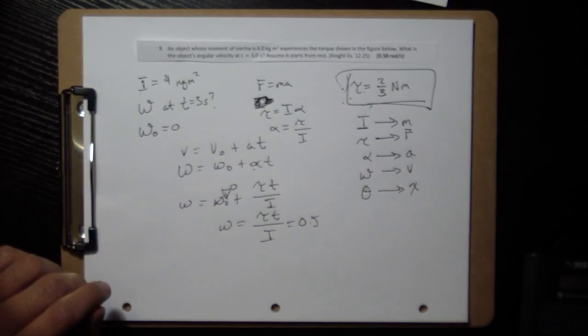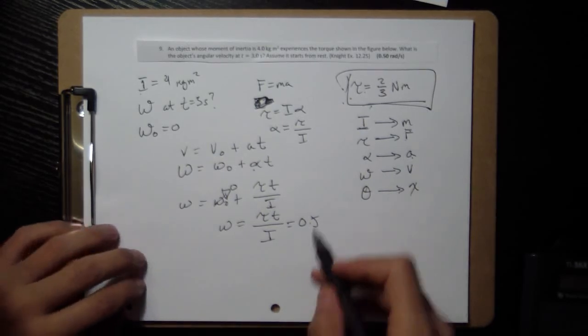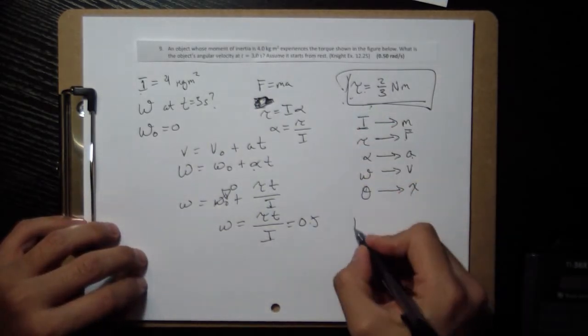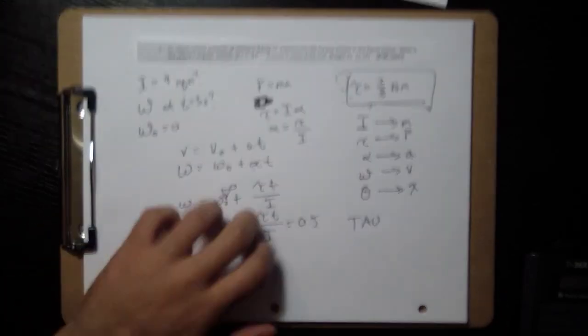Just as an FYI, the little symbol I'm writing for torque is a Greek letter tau, spelled T-A-U. And that's it. Thank you very much.